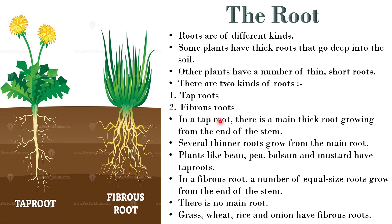In a tap root, there is a main thick root growing from the end of the stem, and several thin roots grow from the main root, as we can see in this image. Plants like beans, tea, balsam and mustard have tap roots.